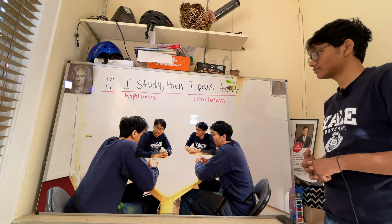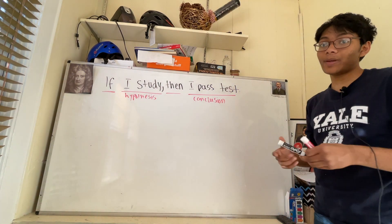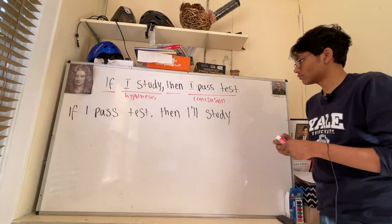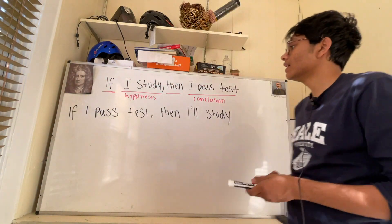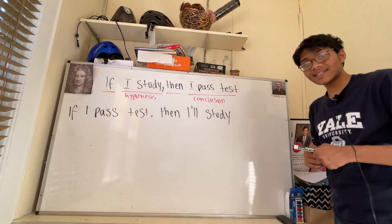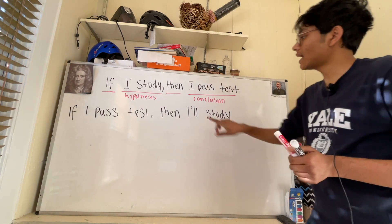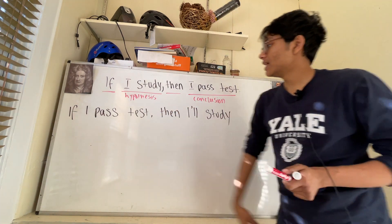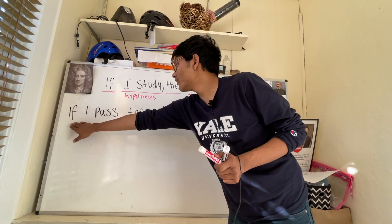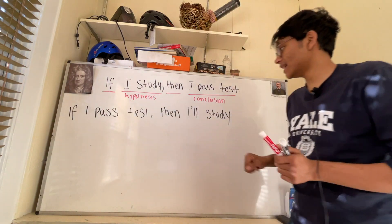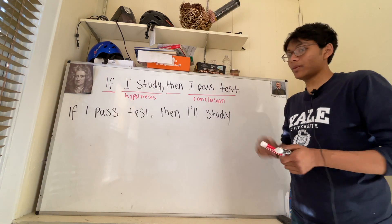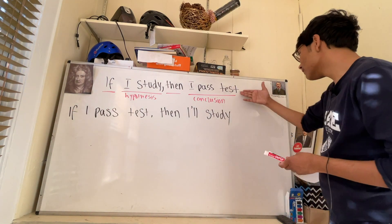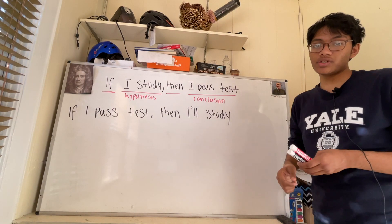The second robot says: if I pass the test then I'll study. Here you can see the hypothesis and conclusion are switched. You have 'if the conclusion' — I pass the test — 'then the hypothesis' — I'll study. So this is called the converse of our original statement.